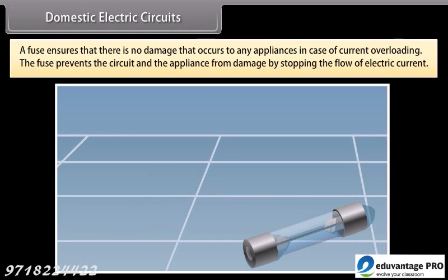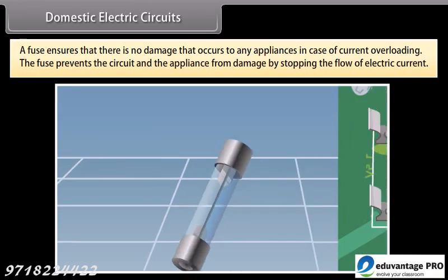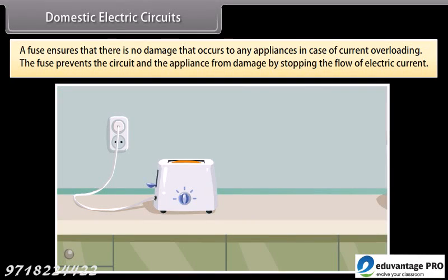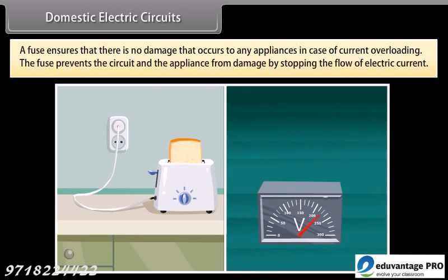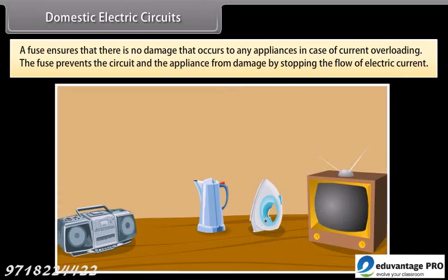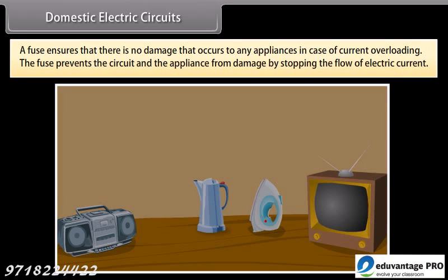A fuse is an important part of all circuits. It ensures that there is no damage that occurs to any appliances in case of current overloading. Overloading occurs when the live wire and the neutral wire come in contact with each other or there is a rise in the supply voltage. In this case, the fuse prevents the circuit and the appliance from damage by stopping the flow of electric current.